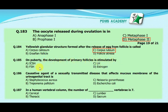Our next MCQ is: at puberty, the development of primary follicles is stimulated by — option A: ICSH (interstitial cell stimulating hormone), option B: FSH (follicle stimulating hormone), option C: LH (luteinizing hormone), option D: estrogen. Our correct answer is B, FSH.